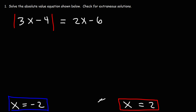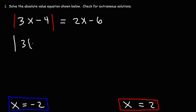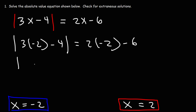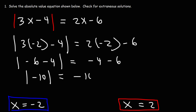Which solution is extraneous — negative 2 or positive 2? Plugging in x equals negative 2: 3 times negative 2 minus 4 gives negative 10, and 2 times negative 2 minus 6 also gives negative 10. But the absolute value of negative 10 is positive 10, which does not equal negative 10. So x equals negative 2 is the extraneous solution.